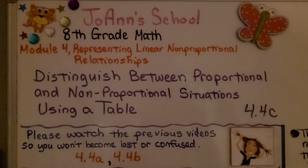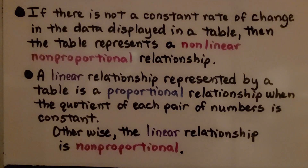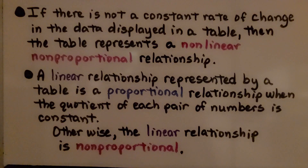Distinguish between proportional and non-proportional situations using a table. If there is not a constant rate of change in the data displayed in a table, then the table represents a non-linear, non-proportional relationship. A linear relationship represented by a table is a proportional relationship when the quotient of each pair of numbers is constant. Otherwise, the linear relationship is non-proportional.